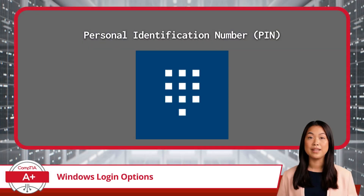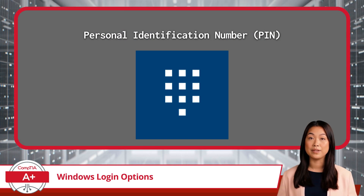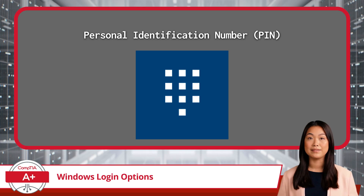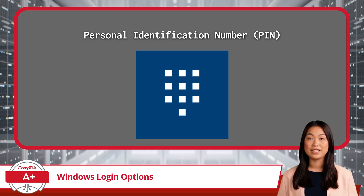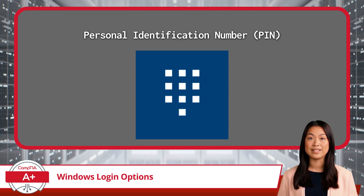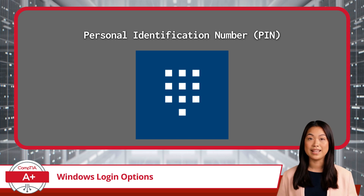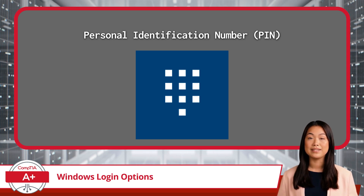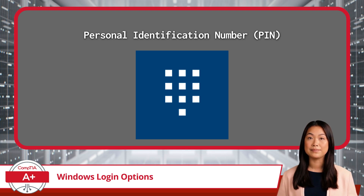A personal identification number, or PIN, is a simpler alternative to a password, and it's unique to your device. Unlike a password, a PIN stays local to your machine and cannot be used on other devices or online services, making it a bit more secure in certain contexts. To set it up, go to Sign-in Options, select Windows Hello PIN, and create your PIN.